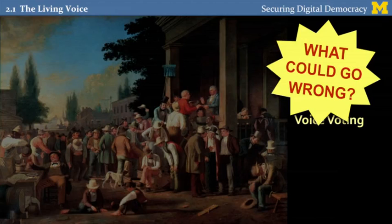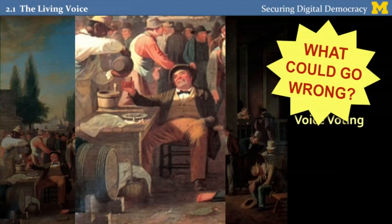Furthermore, a second problem with voice voting was vote buying. Here on the left of the painting we see this happy looking fellow who is receiving a drink and seems to have just finished a meal. This kind of paying off of voters would be tremendously easy with this system, because you could just make sure they voted the right way and then offer them the freebies as a reward. There was no way to prevent this at the beginning of modern democracy — this was just the status quo.